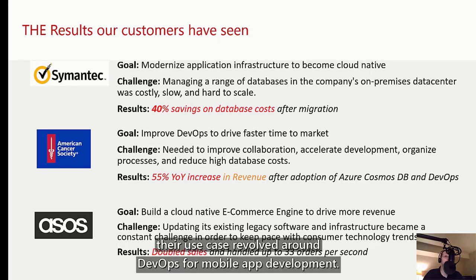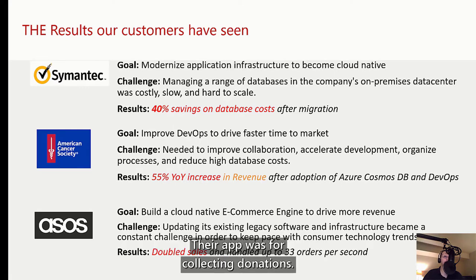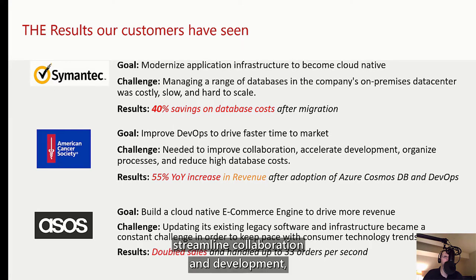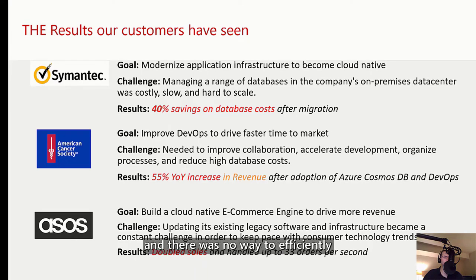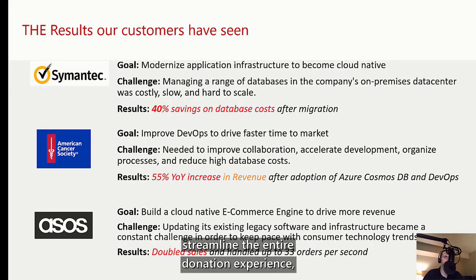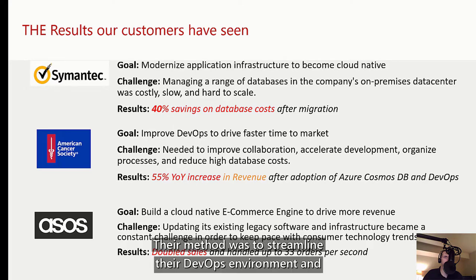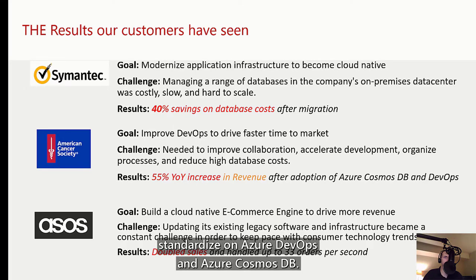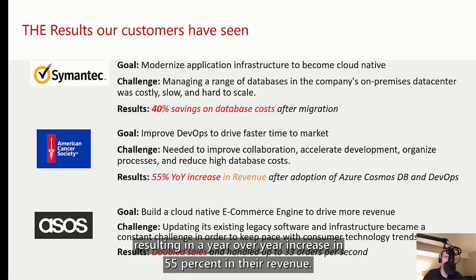With the American Cancer Society, their use case revolved around DevOps for mobile app development. Their app was for collecting donations. American Cancer Society faced challenges before going cloud native — it was very hard to streamline collaboration and development, and there was no way to efficiently push software updates to members. Their goal was to streamline the entire donation experience so consumers can benefit cancer research. They standardized on Azure DevOps and Azure Cosmos DB, ultimately enabling fast release cycles on their mobile app, resulting in a 55% year-over-year increase in revenue.